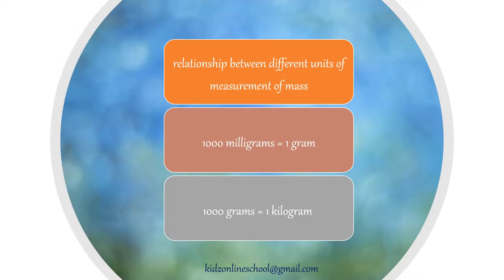Relationship between different units of measurement of mass: 1000 mg is equal to 1 gram, and 1000 g is equal to 1 kilogram.